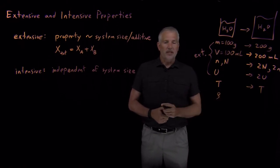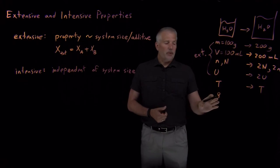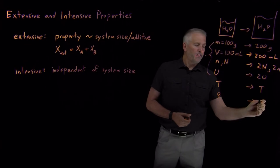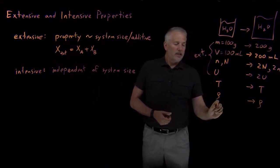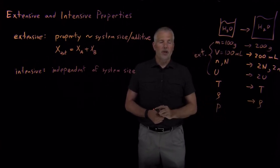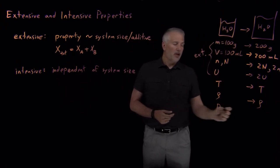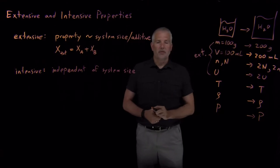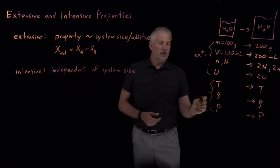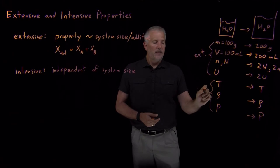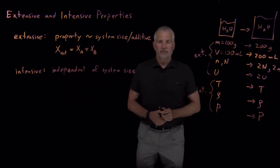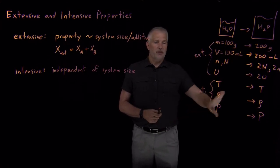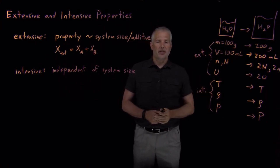Likewise, water has a density of one gram per milliliter regardless of whether I have a small or large beaker — that density stays the same. Similarly, if the water is under atmospheric pressure of one atmosphere, doubling everything in the system still leaves it at one atmosphere. So temperature, pressure, and density are all intensive properties. Extensive properties scale with system size; intensive properties don't change at all when the system size changes.